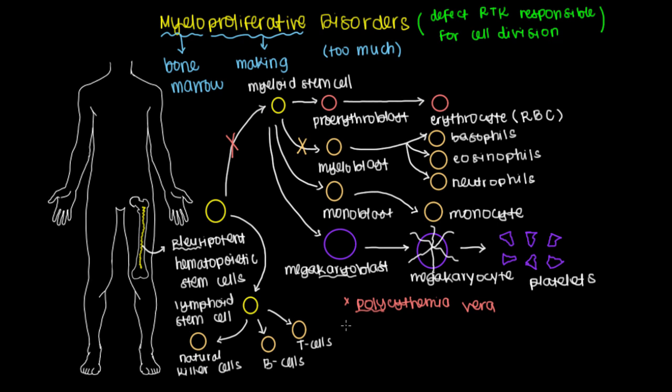Or let's say you have the defect right here, where the myeloblast branches off. In that case, you would have a disorder known as chronic myelogenous leukemia. And you might recall leuk meaning white, which refers to leukocytes, which I've colored in all of these little beige colors here. This defect will produce a whole bunch of leukocytes, mainly through the myeloblast lineage.